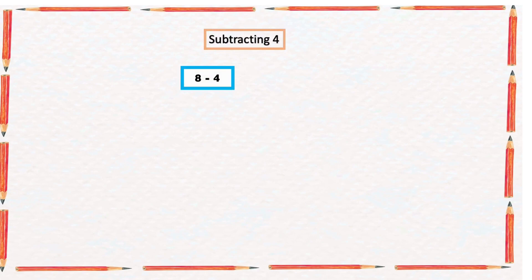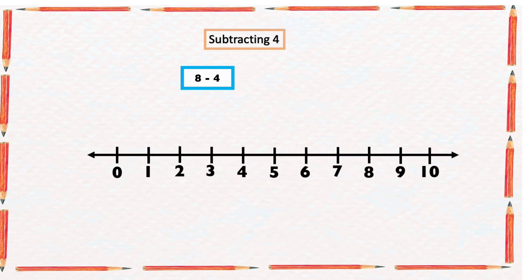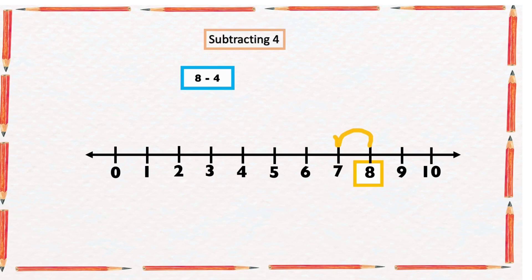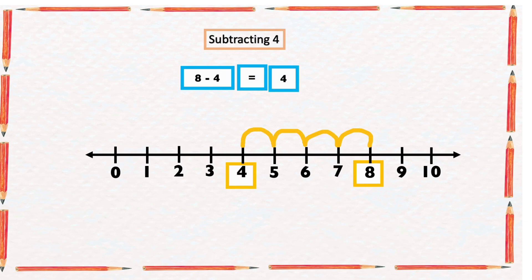Our first example says eight minus four. We're going to make use of a number line. We're going to start from the bigger number, eight, and count four numbers backward: one, two, three, four. The arrow ended at four, so eight minus four is equal to four.